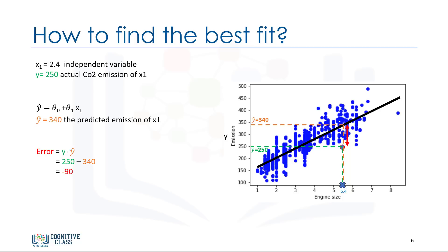So, we can say the error is the distance from the data point to the fitted regression line. The mean of all residual errors shows how poorly the line fits with the whole data set. Mathematically, it can be shown by the equation mean squared error, shown as MSE. Our objective is to find a line where the mean of all these errors is minimized. In other words, the mean error of the prediction using the fit line should be minimized. The objective of linear regression is to minimize this MSE equation, and to minimize it, we should find the best parameters theta0 and theta1. Now, the question is how to find theta0 and theta1 in such a way that it minimizes this error. How can we find such a perfect line? Or, said another way, how should we find the best parameters for our line? Should we move the line a lot randomly and calculate the MSE value every time and choose the minimum one? Not really.